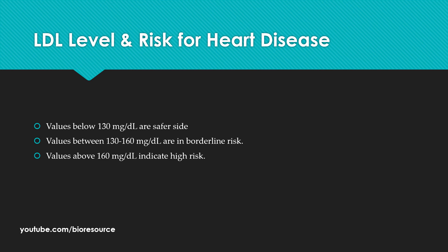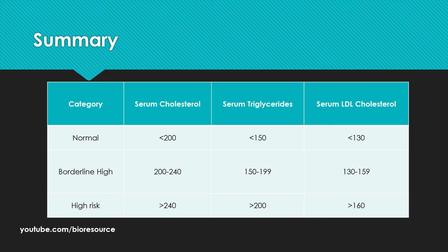Values below 130 mg per deciliter are on the safer side, whereas values between 130 to 160 mg per deciliter of LDL are in the borderline risk range, and values above 160 mg per deciliter indicate high risk. In summary, the total serum cholesterol should normally be less than 200 mg per deciliter. Anything between 200 to 240 mg per deciliter is considered borderline high, and anything above 240 mg per deciliter indicates very high risk for heart disease.